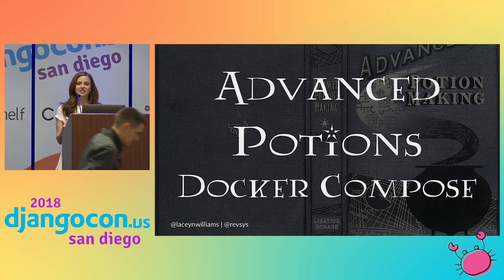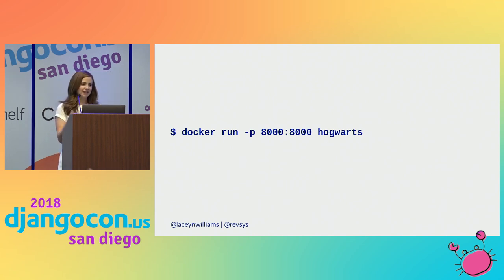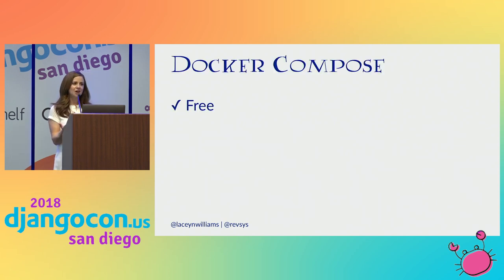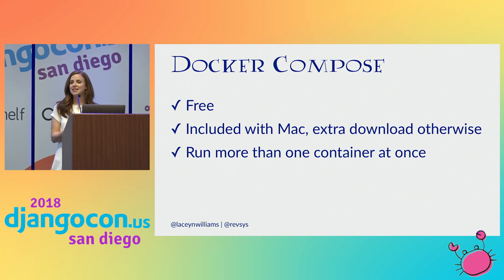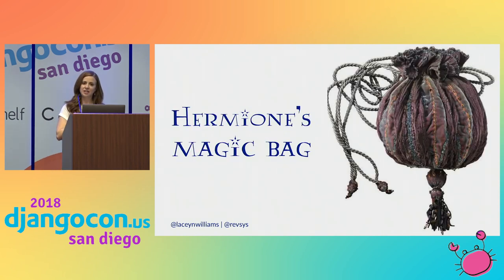One of my favorite features of Docker that makes it so pleasant for Django development is Docker Compose. That docker run -p 8000:8000 hogwarts command is kind of a lot to type — it's not super flexible and not very intuitive. You might be thinking, why would I type this whole command when I could just type manage.py runserver? This is where Docker Compose comes in. Docker Compose is a sort of add-on to Docker — it's free; if you're on a Mac it's included with Docker, and on other systems it's a separate download. The magical thing it lets you do is run more than one container at once.